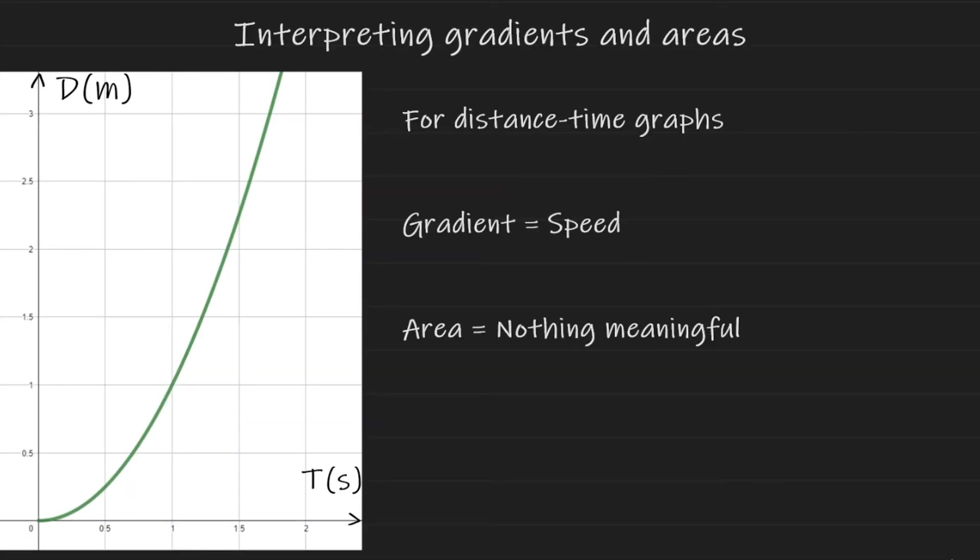Okay, now we're going to interpret what gradients and areas actually mean in context. So here I have a graph of an object and it's a distance time graph. For a distance time graph, the gradient at any point of this graph will be equal to the speed of the object. The area between the graph and the x-axis for a distance time graph has no significant meaning.